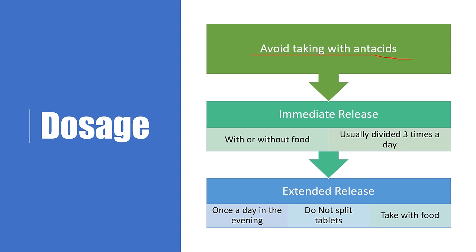Avoid taking gabapentin with antacids like Tums — they reduce absorption, so space them out by a couple of hours. That does not apply to omeprazole or proton pump inhibitors, which are different. The immediate release form, by far the most common, can be taken with or without food and is generally divided three times a day, about every eight hours. There is an extended release form — less commonly used, often more expensive with spotty insurance coverage — taken once daily in the evening with food; do not split those tablets.